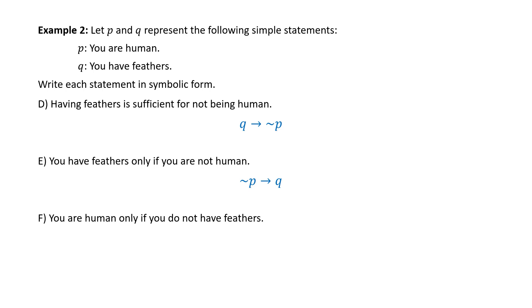Part F: 'You are human only if you do not have feathers.' Notice that the statements are reversed from Part E. Symbolically, we write ∼Q → P.